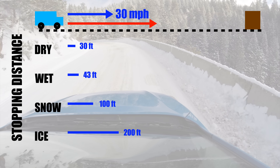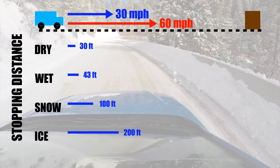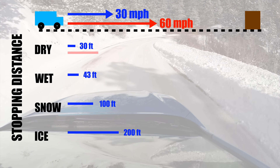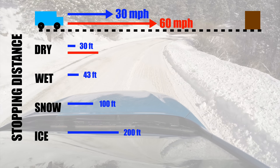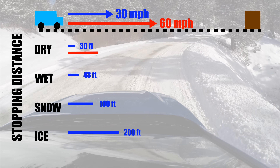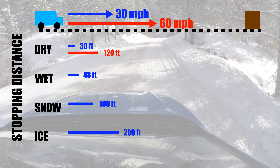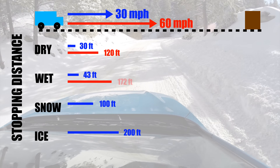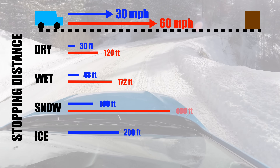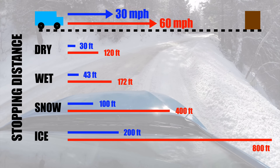What if we were stopping from 60 miles per hour to zero? Because stopping distance is a function of speed squared, our stopping distances are multiplied by four. Stopping from 60 to zero in the dry takes 120 feet, in the wet 172 feet, in the snow 400 feet, and on ice 800 feet.